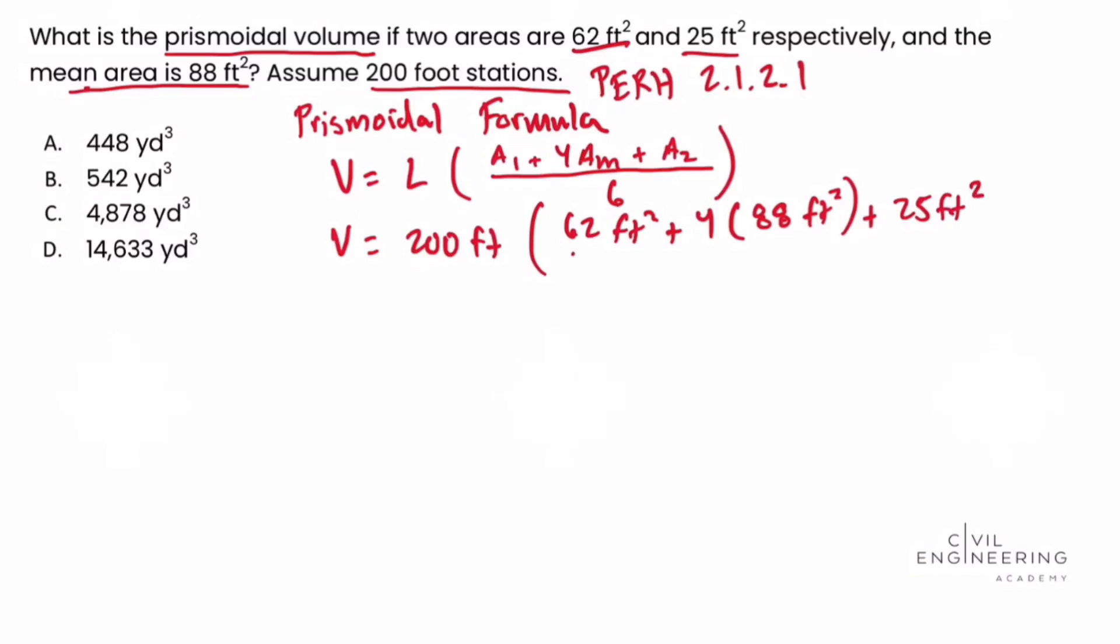Divide all of that by 6 in the denominator and close the bracket. So working that out we get a volume that's equal to 14,633.33 repeating decimal cubic feet.